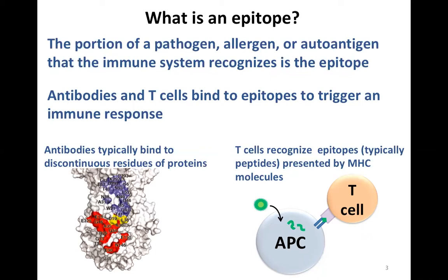Antibodies typically bind to discontinuous residues of proteins. The colored amino acids in this influenza protein might be bound by different antibodies — for example, an antibody that binds to the red and yellow residues might protect you from this flu molecule. But if next year the flu mutates and those residues change, the antibody might lose its ability to bind and neutralize the protein. That's why you need a new flu vaccine every year: to include the epitopes from that year's strain so your immune system can still recognize them.